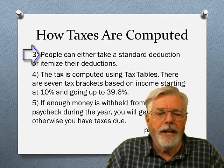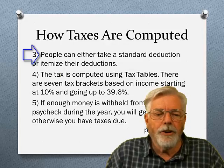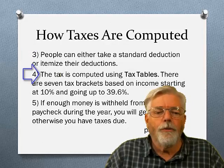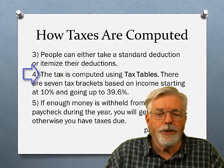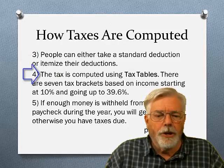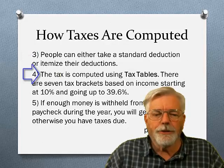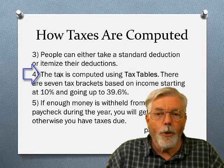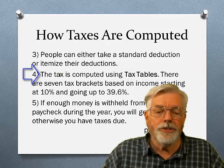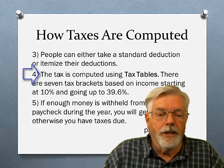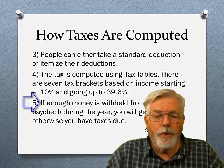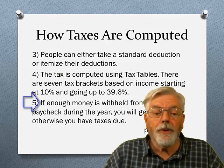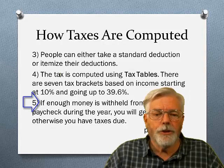Step 3: people can either take a standard deduction or itemize their deductions. Step 4: the tax is computed using tax tables — there are seven tax brackets based on income starting at 10% and going all the way up to 39.6%. Step 5: if enough money is withheld from your paycheck during the year, you will get a refund; otherwise, you have taxes due.